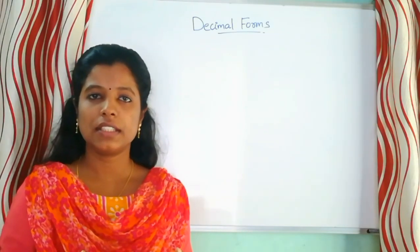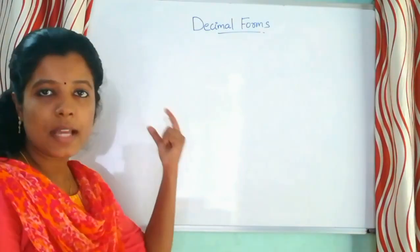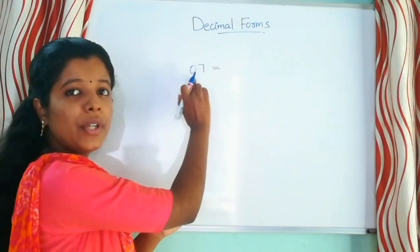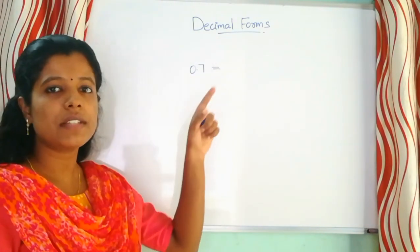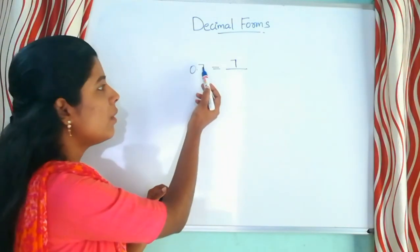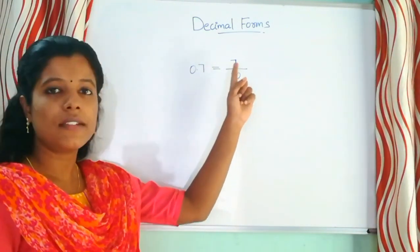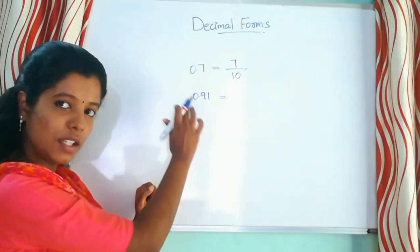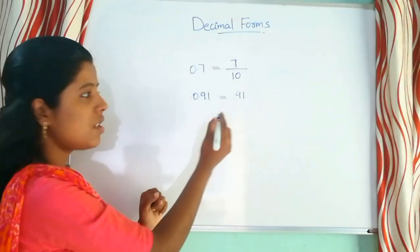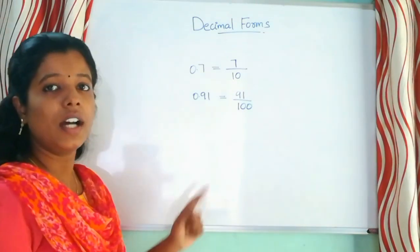We have to write it after the fraction. So we have to write one example: 0.7. We have to write a fraction. The numbers are 0 and 7, so we have to write it. How many points are there? Then we have 10. If we add 10 to 10, now we look at 0.91.